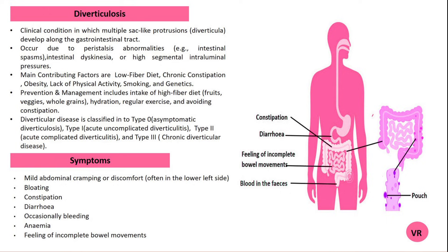Diverticulosis is a condition where small bulging pouches called diverticula form in the lining of the digestive tract, most commonly in the colon, that is the large intestine. These pouches develop at weak spots in the intestinal wall and are usually harmless and asymptomatic.